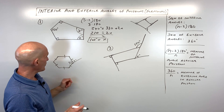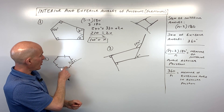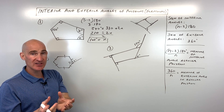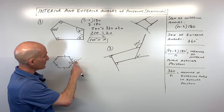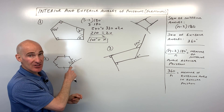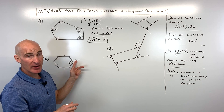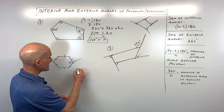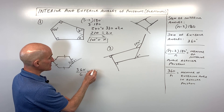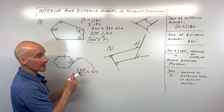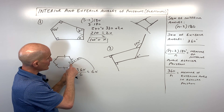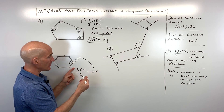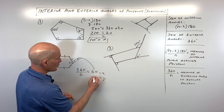For number 2, all sides are congruent — this is a regular hexagon because there are six sides and six angles. All the angles are the same measure and all the sides are the same length. We want to find the exterior angle measure and the interior angle measure. For the exterior angle, all exterior angles add up to 360. Dividing by 6 gives 60 degrees — that's the measure of one exterior angle.